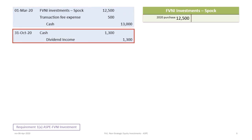Then on October 31, Spock pays a dividend to McCoy. We debit Cash and credit Dividend Income for $1,300, which is based on 5,000 shares times a $0.26 dividend.